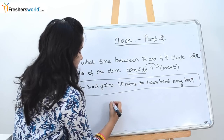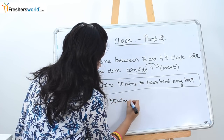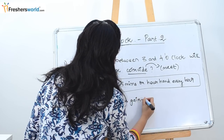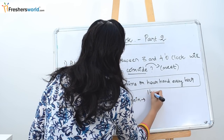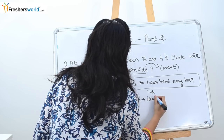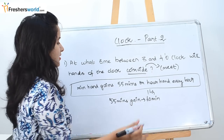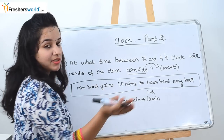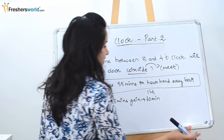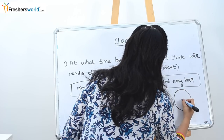So the minute hand gains 55 minutes for every 60 minutes — that is, for every one hour. The question asks: between 3 o'clock and 4 o'clock, at what time will the minute hand and hour hand meet? Let's take a clock and work through this.